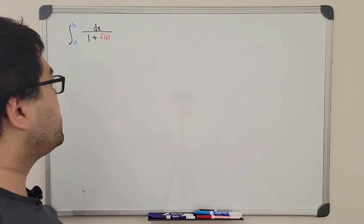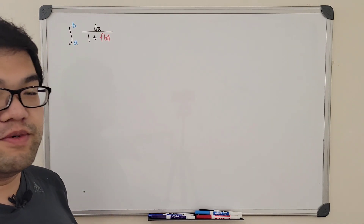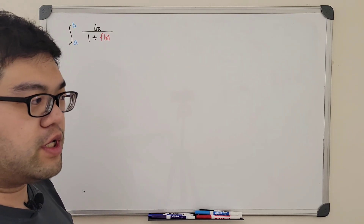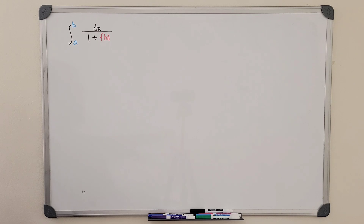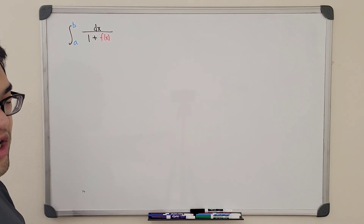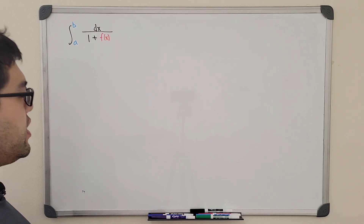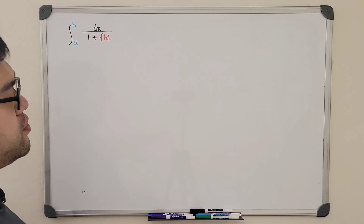Today we're going to look at two different integrals and continue working on the king's property in order to help us solve integrals quickly. The integrals we're looking at will have the form from some value a to b — where a and b can be any extended real numbers including negative infinity to positive infinity — of the function 1 over 1 plus some function f(x) dx. The function f(x) is different in the two problems.